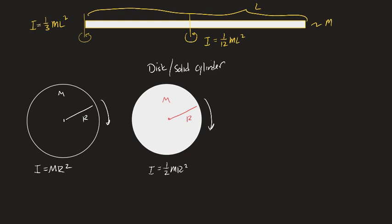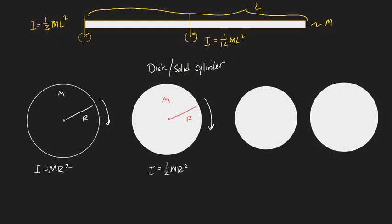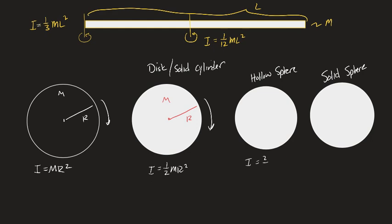Although there's no requirement to memorize them, it's in your best interest to know them — it will make everything happen so much faster. If you've figured it out, they're all basically the same, just with a different fraction out front. All you really need to memorize are the fractions — they're all ML squared or MR squared. The smaller fraction applies when you're spinning it about the center; the larger one is when you're spinning it about the end, because more of the mass is further away from the axis of rotation.